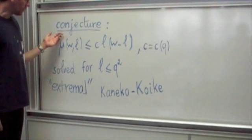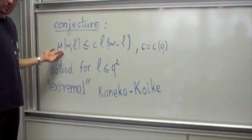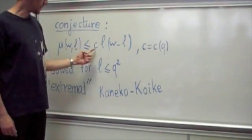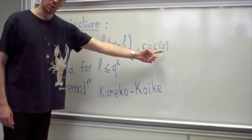We found the following conjecture reasonable. The order of vanishing above is bounded by the following quantity, where C is a constant depending on Q only.